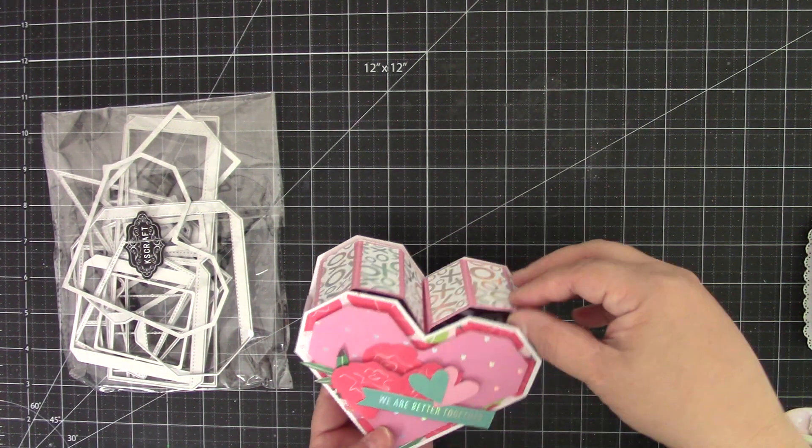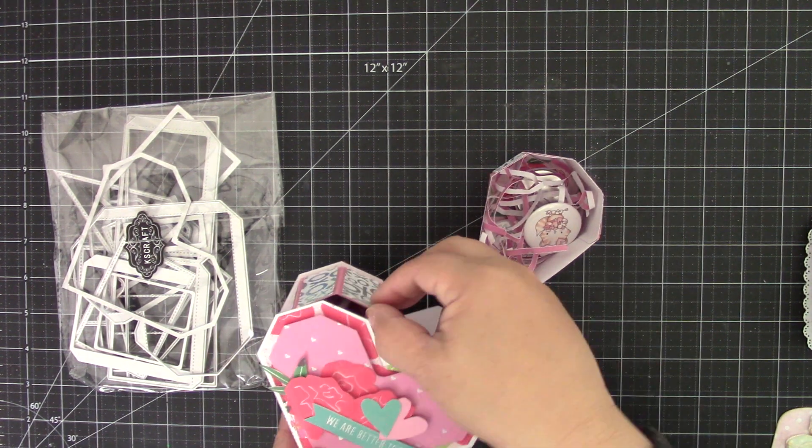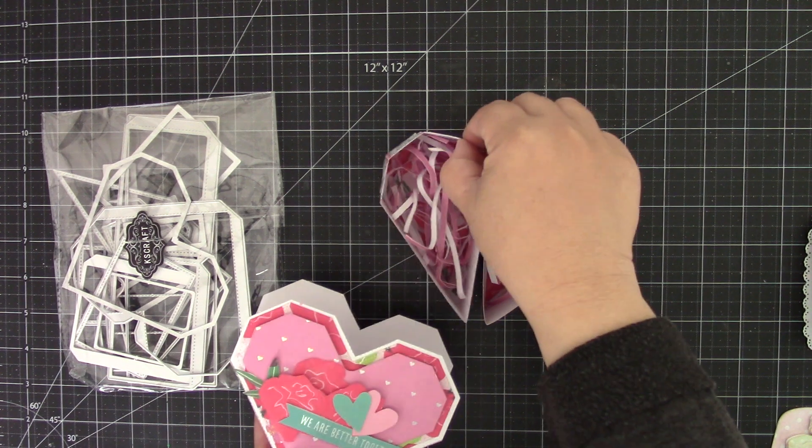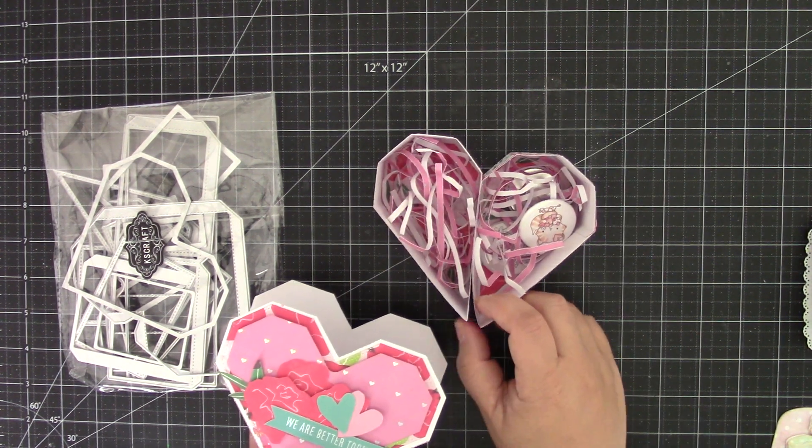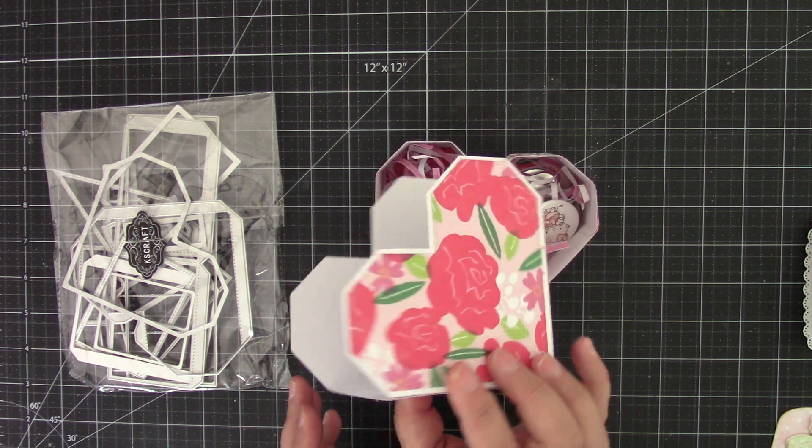And then you can see the heart have drawers. Isn't that cute? And you can see the shape of the heart. So you can see it's a pretty nice size box.